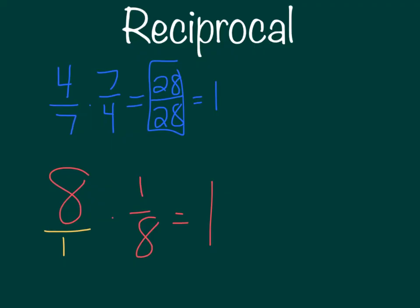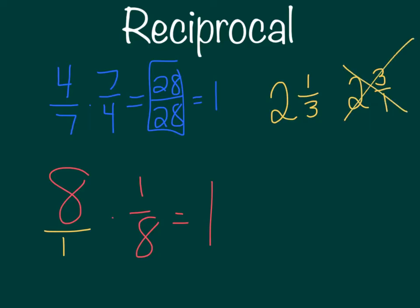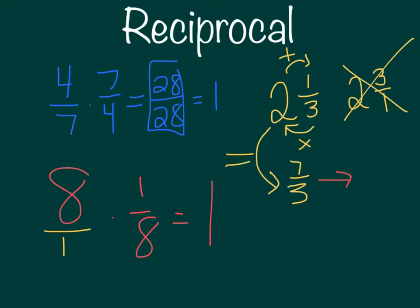Let's take a look at one more number before we move on to dividing. Let's say we have two and one-thirds. How can we find the reciprocal of this mixed number? It's not as simple as just flipping the fraction — that doesn't work. We need to turn it into an improper fraction first. We multiply our denominator by our whole number and add the numerator, getting seven-thirds. Now I can find the reciprocal by flipping to three-sevenths. So seven-thirds and three-sevenths are reciprocals of each other.